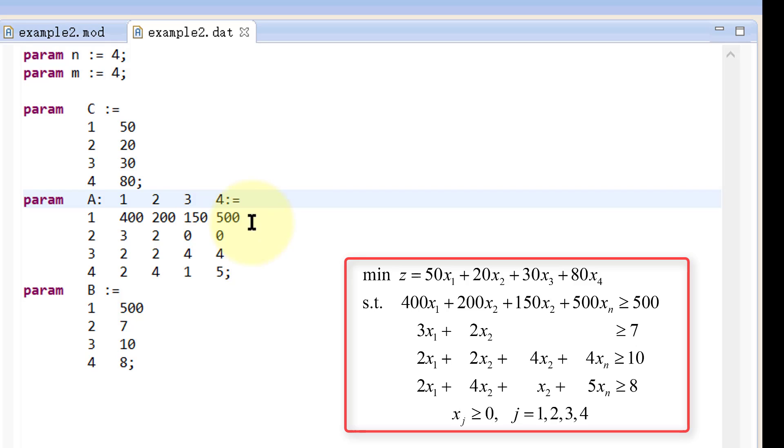The constraint coefficient a is a 4 by 4 matrix, so the first row also contains the indexes. And we separate a from the indexes with a colon. The right-hand side of the constraints are assigned to B.